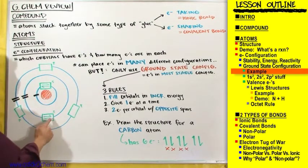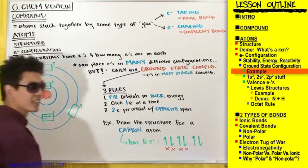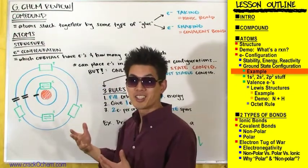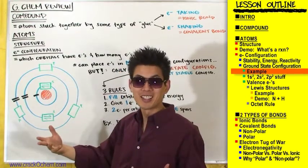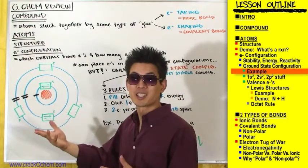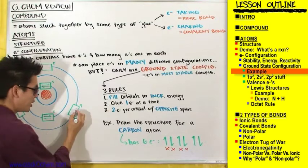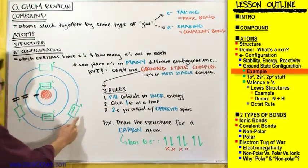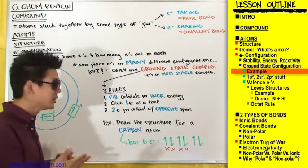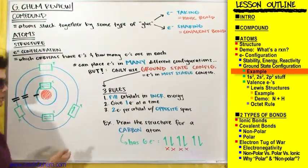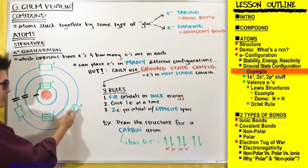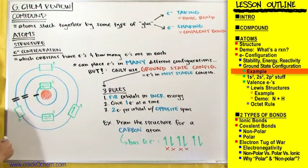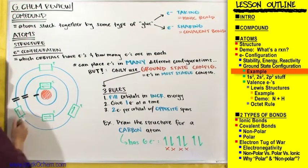We've finished filling this orbital and can now move on to the next highest energy orbitals — these three. Which do we fill first? They're all the same distance from the nucleus, so they're basically the same energy. It doesn't matter — arbitrarily, I'll choose this one and give it one electron. Now, do we fill this orbital with a second electron or give the next electron to one of the other orbitals of equal energy? We have to be fair to the other orbitals of the same energy, so I'll give the next electron to one of those instead.